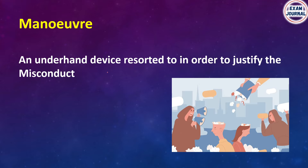Maneuver — an underhand device resorted to in order to justify misconduct. If you have a way to justify it, we call it a maneuver. It's like a car maneuver — sometimes you have to go the wrong way but then take a U-turn, which is also known as a maneuver.